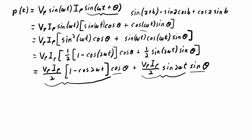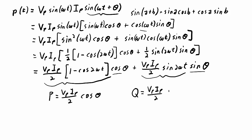When thinking about average power in a system with real and reactive components, the average (real) power P is equal to Vp·Ip/2 · cos(θ), and the reactive power Q — the power cycling back and forth — is Vp·Ip/2 · sin(θ).